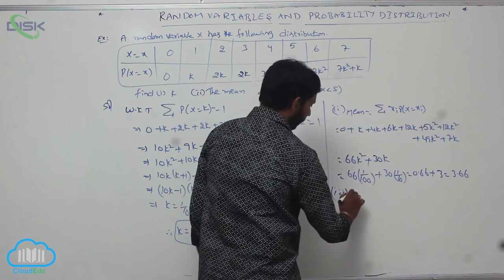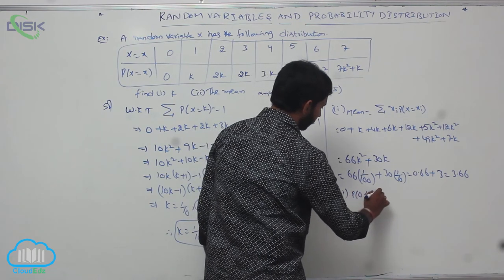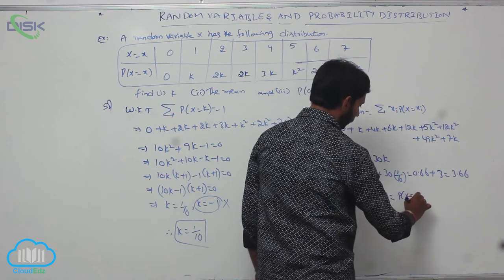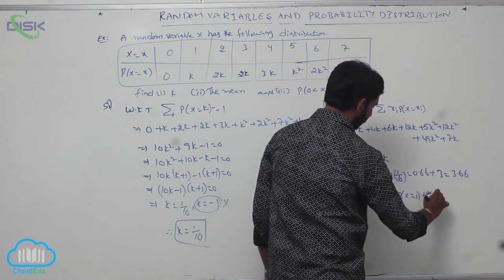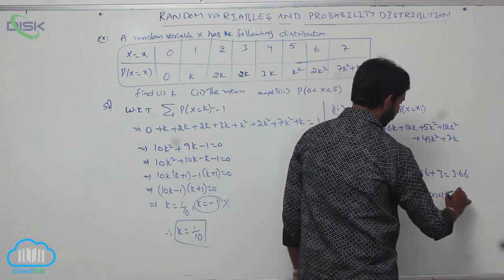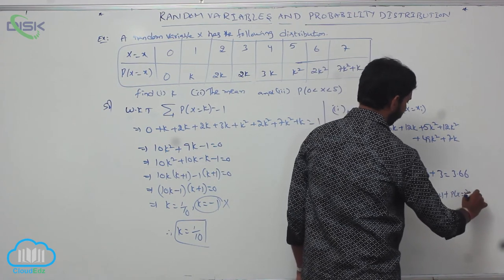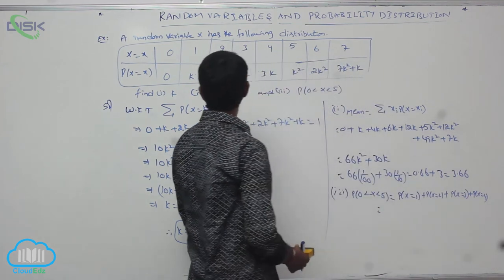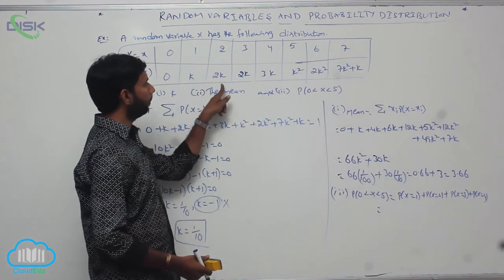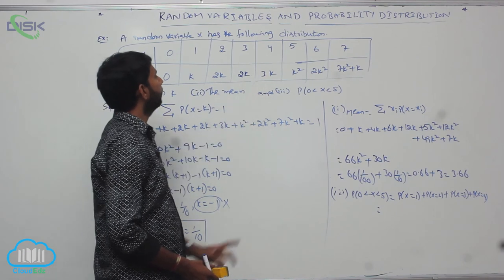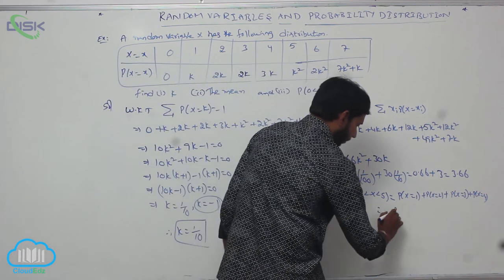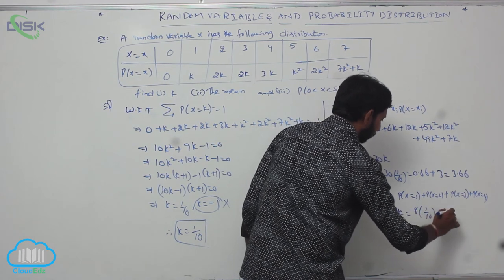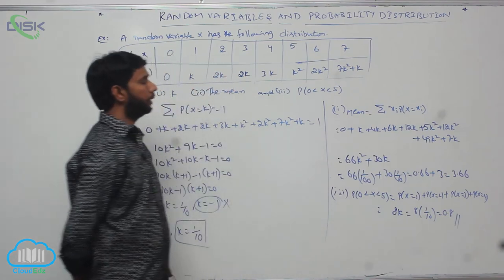The third part: P(0 < X < 5) = P(X=1) + P(X=2) + P(X=3) + P(X=4) = k + 2k + 2k + 3k = 8k. Substituting k = 1/10: 8 × (1/10) = 0.8. Therefore P(0 < X < 5) = 0.8.